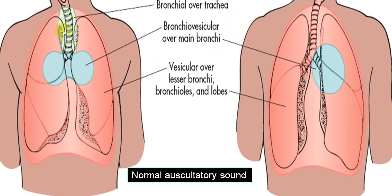D'Espine sign: if you auscultate posteriorly in the paravertebral region and find bronchial breathing, this is because of a paratracheal mass or enlarged lymph nodes — most classically Hodgkin's lymphoma. On percussion you get a dull note over that area. This is D'Espine sign.